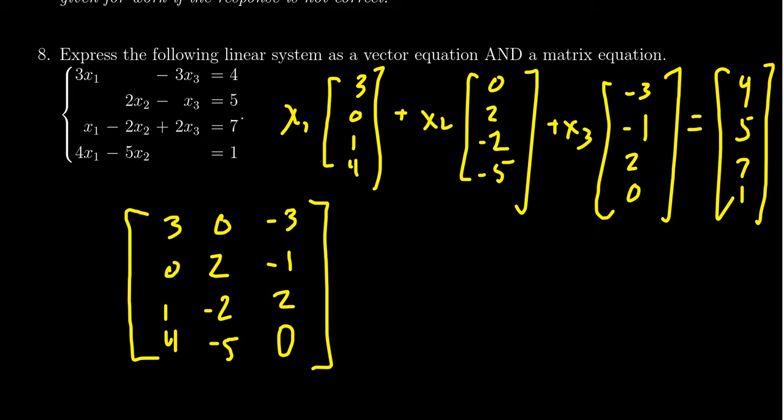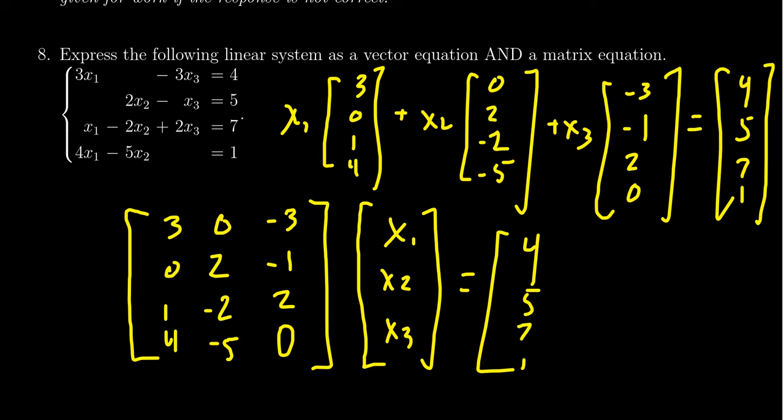This gives us the matrix A, the coefficient matrix. Then we times this by the vector x, which is a variable vector: it'll be x1, x2, x3—this will just be the variables in play. And then this is equal to the right-hand side of those equations, the vector b, which is 4, 5, 7, and 1. So you can see that the right-hand sides of the matrix equation and the vector equation will be identical, and they correspond to the right-hand sides of these things right here.